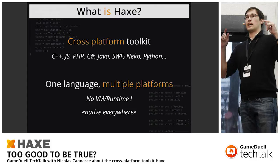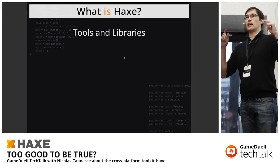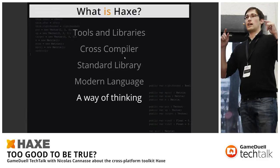We'll see different things in this talk. We'll look at the different tools and libraries we can use with Haxe, what a cross-compiler is and how it works, the Haxe standard library and how it differs from a language standard library, Haxe as a language — how modern it is and its features — and how Haxe's way of thinking differs from other programming languages.